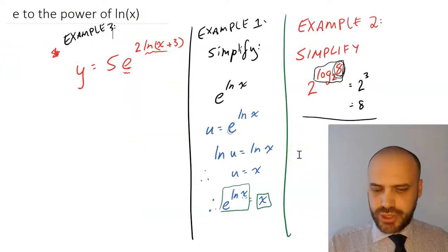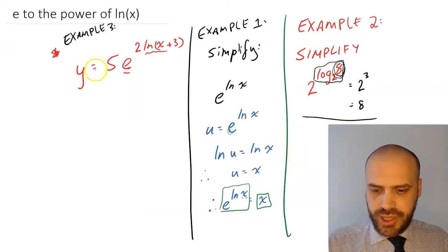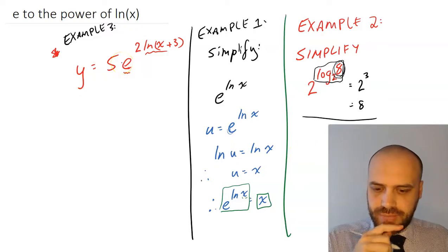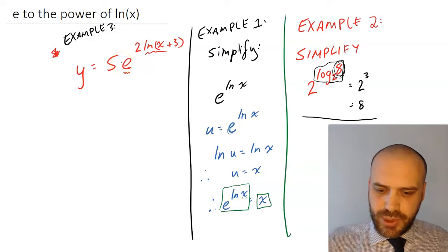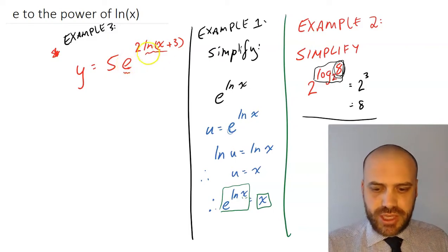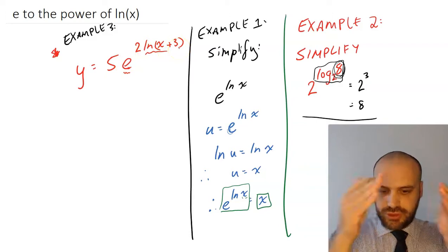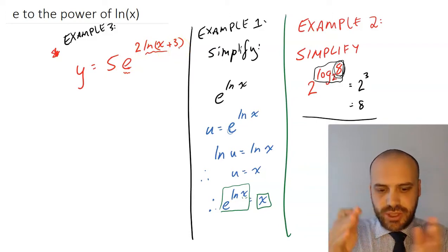Which of course brings us to our original example here. y equals 5e to the 2 ln x plus 3. Now, a bit of a problem here. We want e to be raised to a natural log. Because if e is raised to a natural log, we can look at what the natural log is. And that's going to be our new answer.